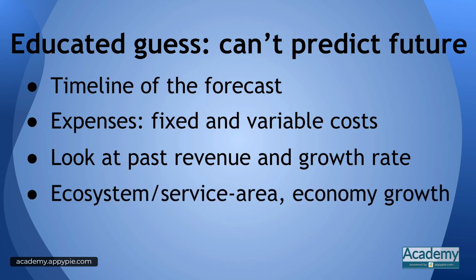Next, look at your ecosystem — it could be Amazon if you're selling there, or a neighborhood if you have a physical store. You want to look at the growth of the economy and what's happening within your ecosystem. For example, in the 90s a newspaper business was in a declining ecosystem, but if you were in the internet space, your ecosystem was growing like crazy.